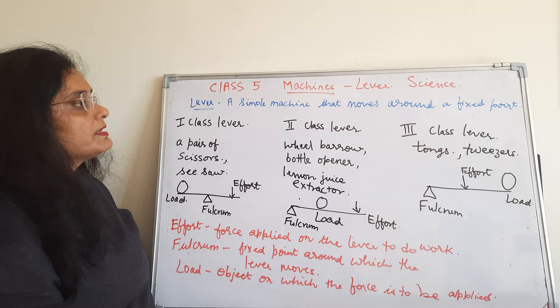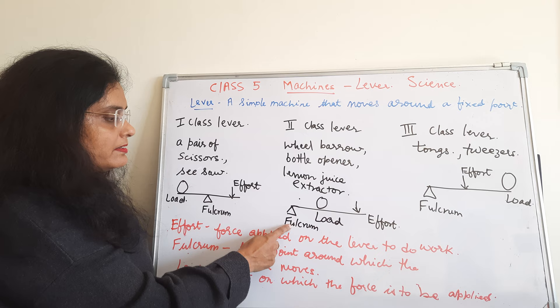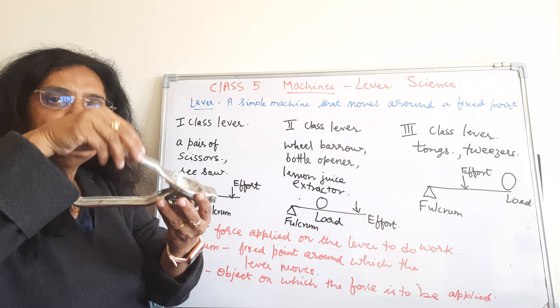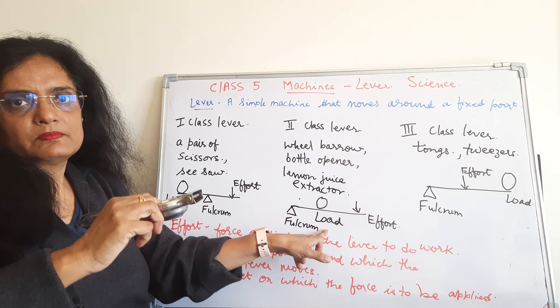Now examples of second class levers are wheelbarrow, bottle opener, and lemon juice extractor. Here the load is in the center — it comes in the middle — and fulcrum is at one end and we put the effort at the other end. Now this is a lemon juice extractor; this is the fulcrum, we put the lemon over here and then we squeeze it. The effort is applied at this end, the load is in the center, and fulcrum is at the other end.